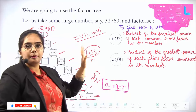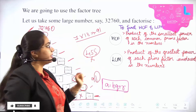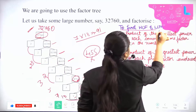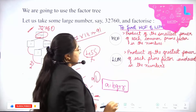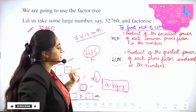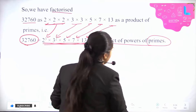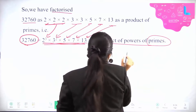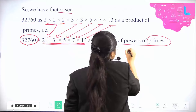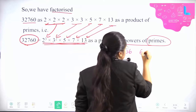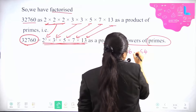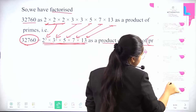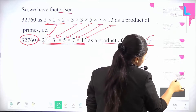Here in the Fundamental Theorem of Arithmetic, to find HCF and LCM, we use this method instead. In this example, how do we find HCF and LCM? There should be two numbers. We have an example — let's just take that.